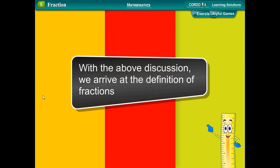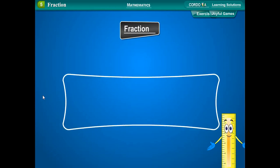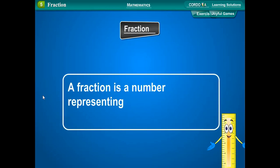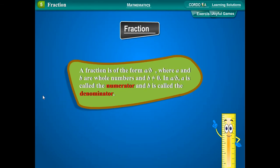With the above discussion, we arrive at the definition of fractions. A fraction is a number representing a part of the whole. A fraction is of the form A upon B, where A and B are whole numbers and B is not equal to zero. In A upon B, A is called the numerator and B is called the denominator.